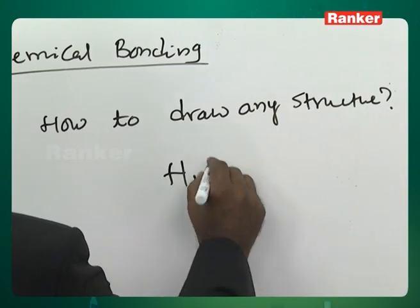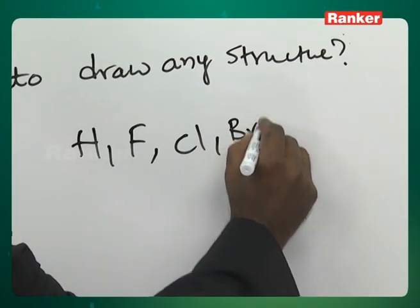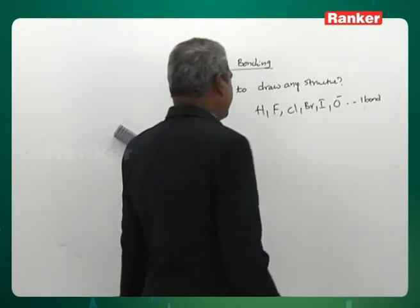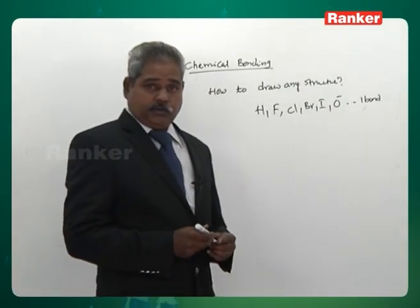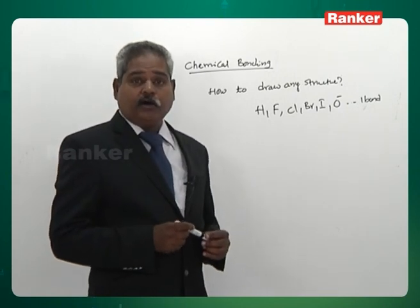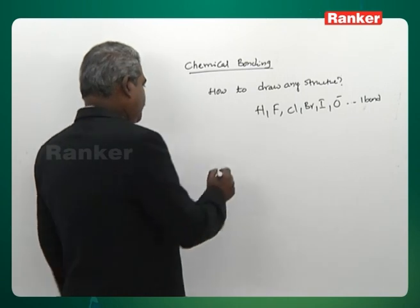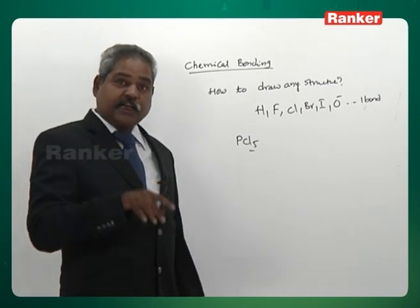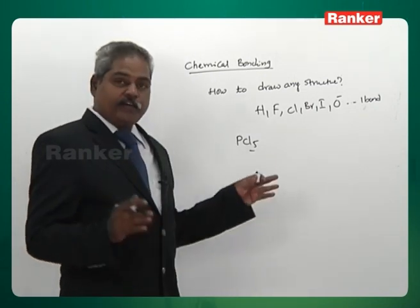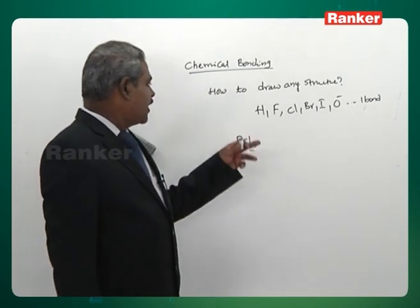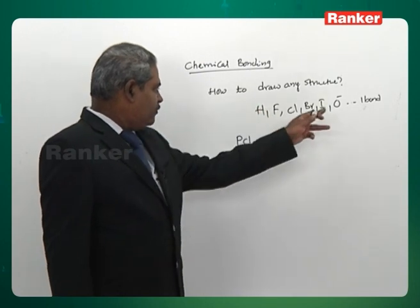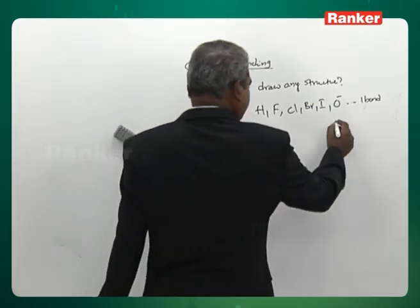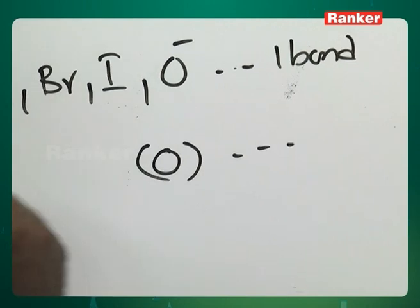H, F, Cl, Br, I, and O⁻ always form one bond when they are terminal atoms. For example, in PCl5, chlorine is the terminal atom and phosphorus is the central atom. When hydrogen or any of these is a terminal atom, they form one bond only. Oxygen, wherever it is as a terminal atom, forms two bonds.